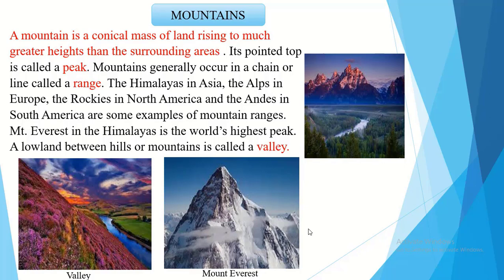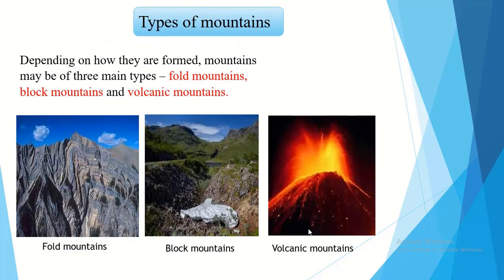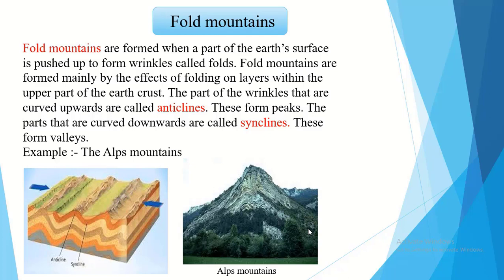Depending on how they are formed, mountains may be of three main types: fold mountains, block mountains and volcanic mountains. Fold mountains are formed when a part of the earth's surface is pushed up to form wrinkles called folds. Fold mountains are formed mainly by the effects of folding on layers within the upper part of the earth's crust. The parts that are curved downwards are called synclines — these form valleys.